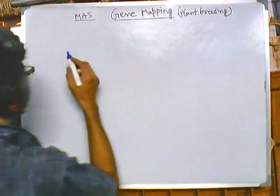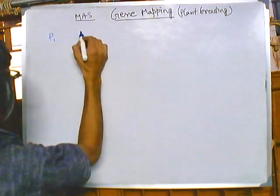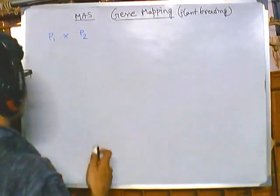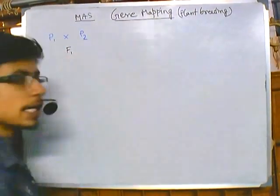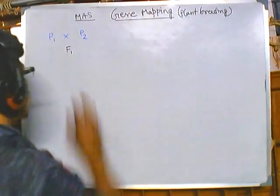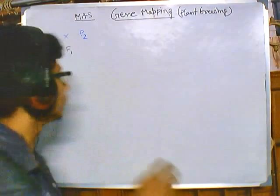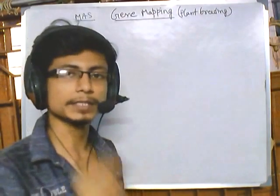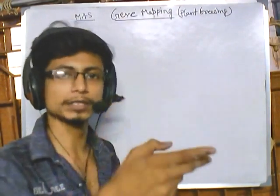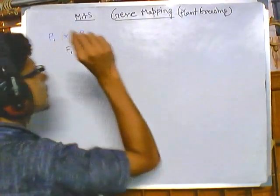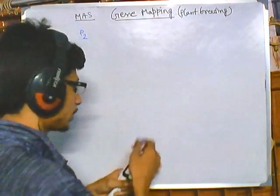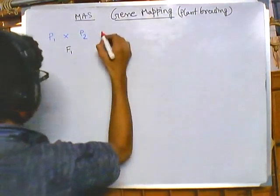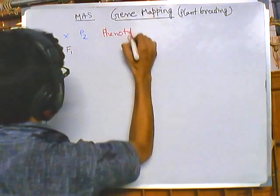Say we have two different parents: parent one and parent two. If we cross these two parents, it generates an F1 offspring. This F1 offspring is then selfed — meaning we take plants from the F1 generation and cross them with other F1 generation plants. This is called phenotypic selection.